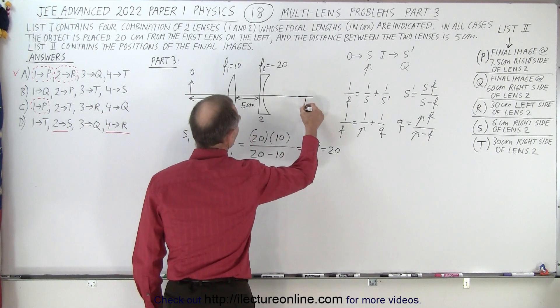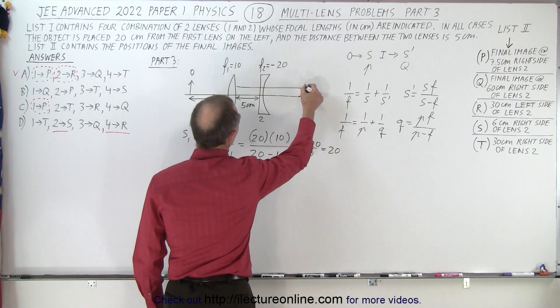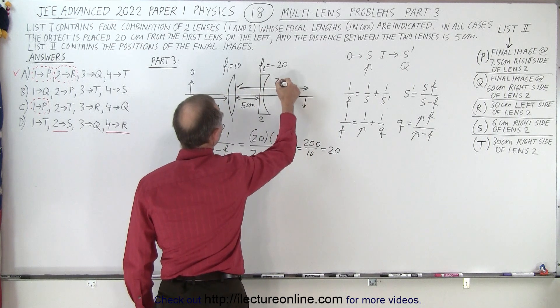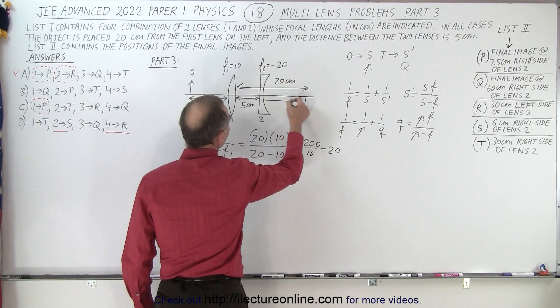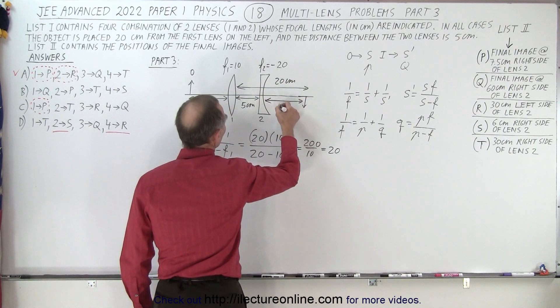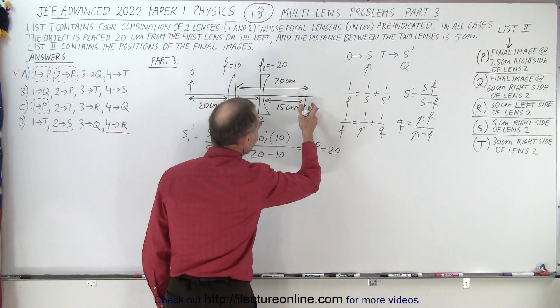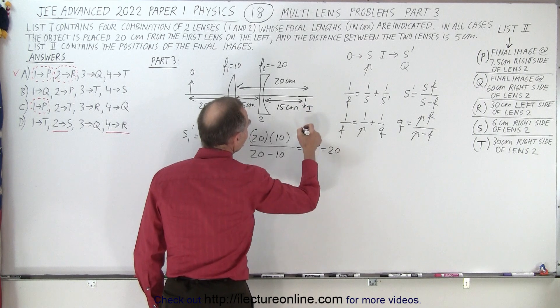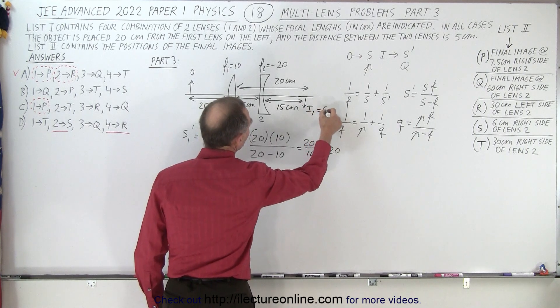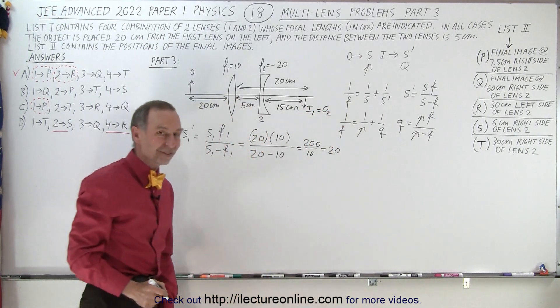So the image will probably look like this, at a distance of 20 centimeters, which means that it is 15 centimeters to the right of lens 2. That gives the object distance a negative value. So image 1 now becomes the object for the second lens.